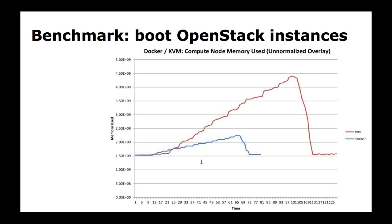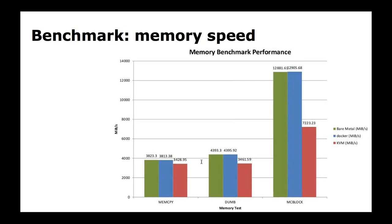That gives an idea of the density ratios achievable with containers. A memory speed benchmark shows that bare metal and containers are exactly as fast while VMs are slower. The whole point is not to say containers are better than VMs and we should throw away VMs. The point is that we can use containers without losing performance.